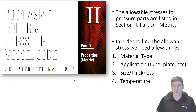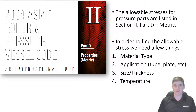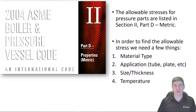In our ASME Boiler and Pressure Vessel Code, we have Section 2, Part D, which is our material properties tables. There are two of them: an imperial version and a metric version. Both are essentially the same, but you have to be careful that you're using the right table.